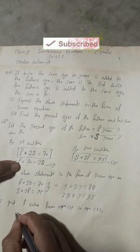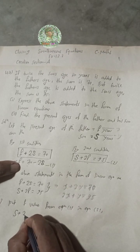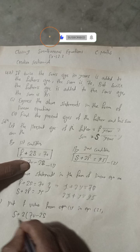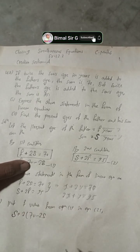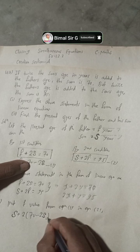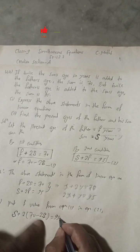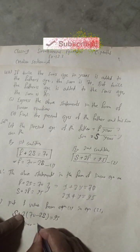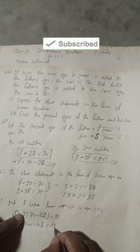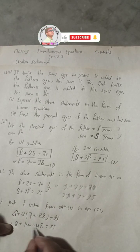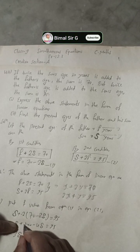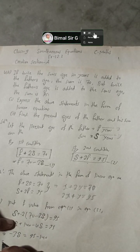From equation one: F = 70 − 2S. Substituting into equation two: S + 2(70 − 2S) = 95, which gives S + 140 − 4S = 95, so −3S = 95 − 140, meaning −3S = −45.